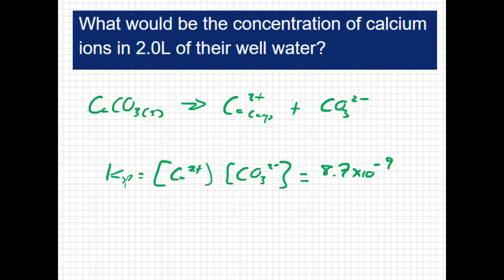So this one's pretty straightforward. We're looking for the concentration of the calcium ion, so we could say that's X. And because of the 1 to 1 ratio, all of these are X as well. So we can say X times X equals 8.7 times 10 to the negative 9, or that's going to be equal to X squared.